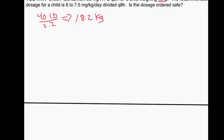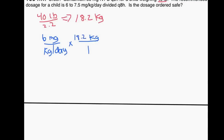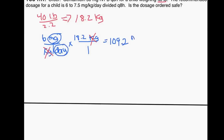I'll take the range of 6 milligrams per kilogram per day and get rid of the per kilogram by multiplying by the patient's weight of 18.2 kilograms. Using dimensional analysis, the kilograms cancel. Six times 18.2 gives 109.2 milligrams per day. This is the lower end of our range — the minimum milligrams per day appropriate for a child weighing 40 pounds.